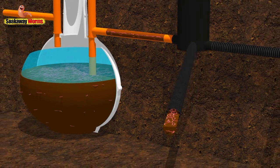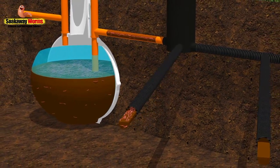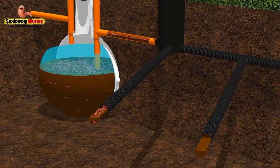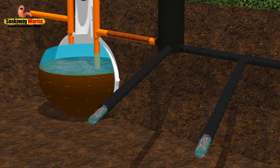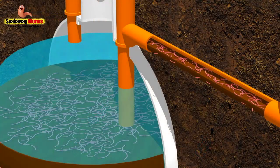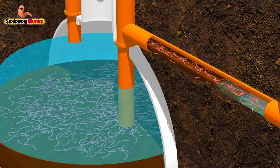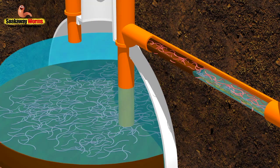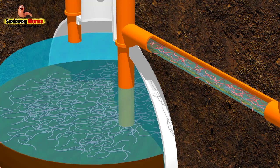As the worms eat all the fat and the grease and the sludge, they'll start cleaning and unblocking the sludge and the waste from the soakaway pipes, allowing the wastewater in the soakaway pipes to start flowing freely once again, enabling it to drain away naturally through the soakaway and into the topsoil.